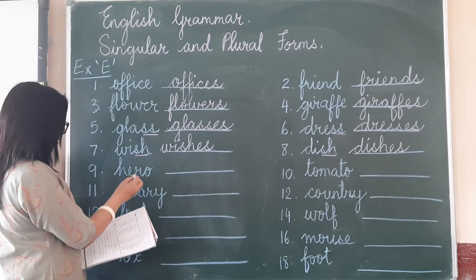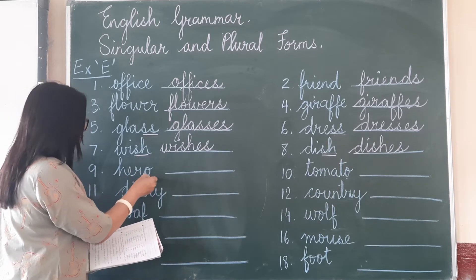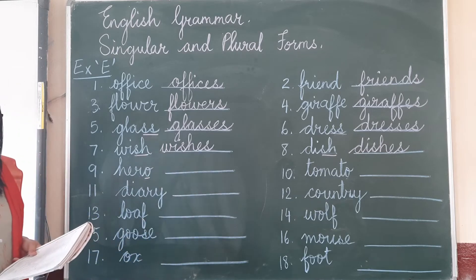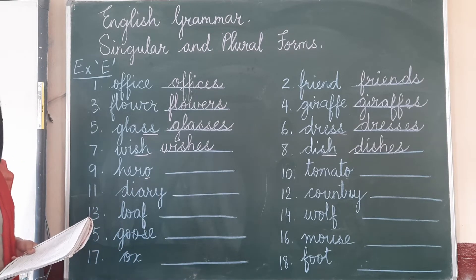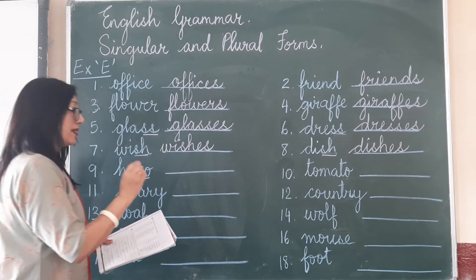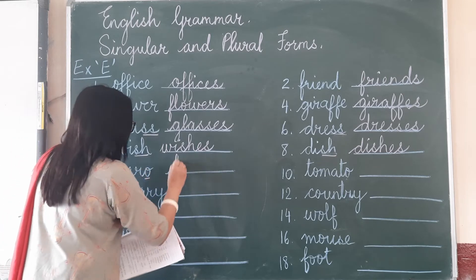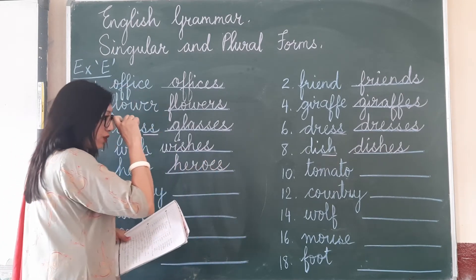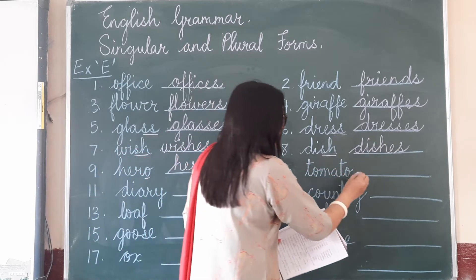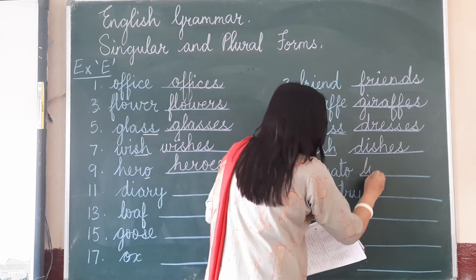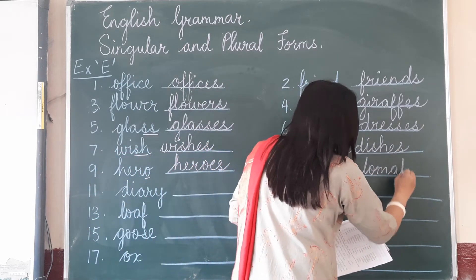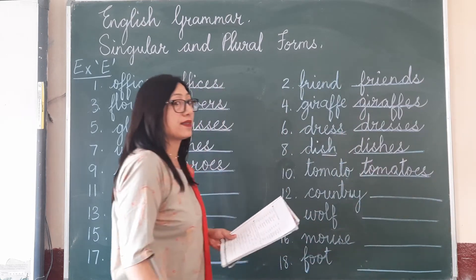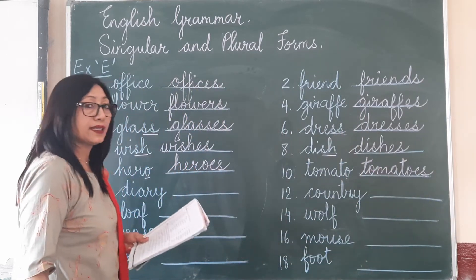Now 'hero' ends in an O. So a noun ending in an O, you add — mostly — you add E-S. So H-E-R-O-E-S, heroes. Tomato, tomatoes — T-O-E-S, you're adding an E-S.